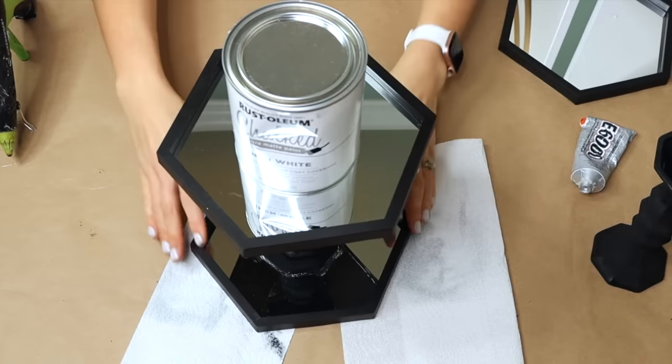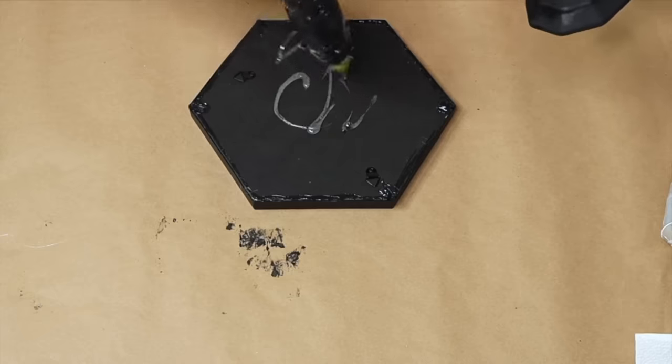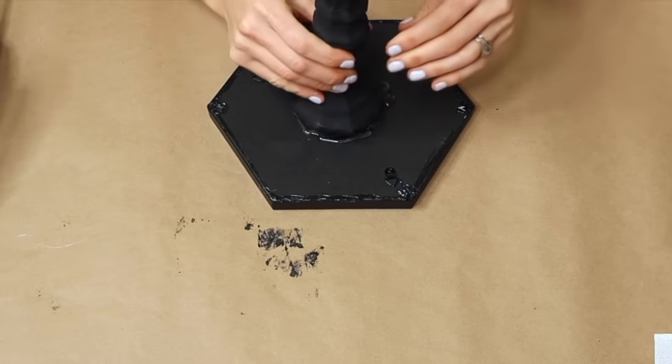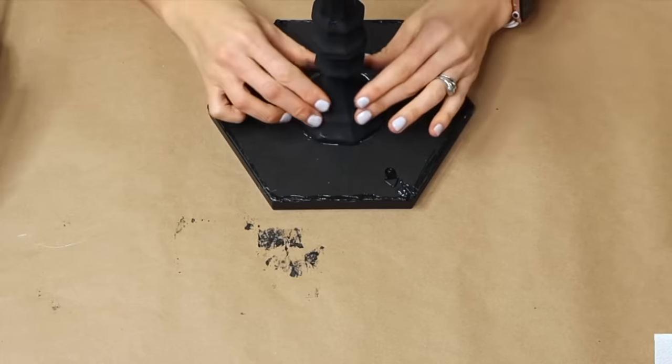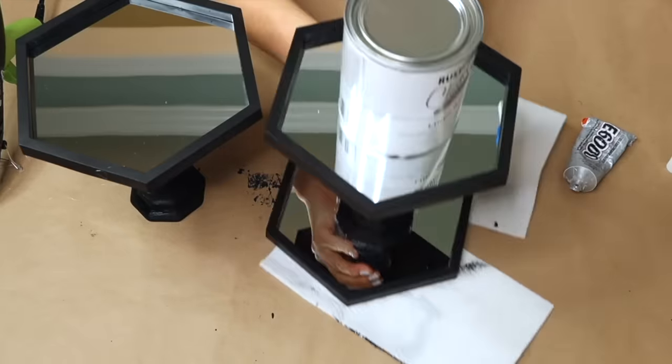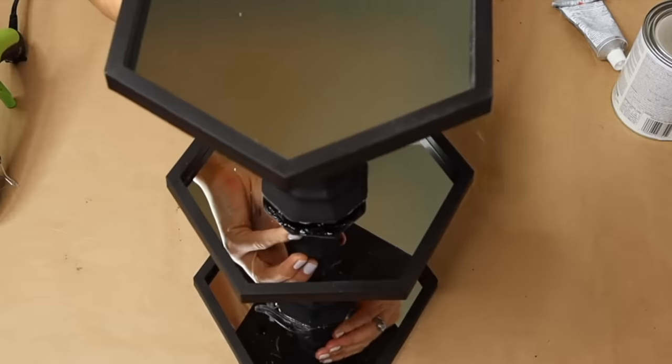Take my second candlestick column and my third mirror, flip the mirror face down and apply the glue to the column before placing it on the center of the back of the mirror. It's time to stack the third mirror onto the other two.